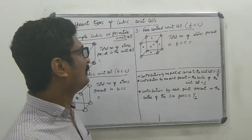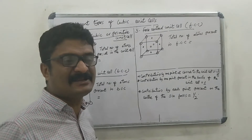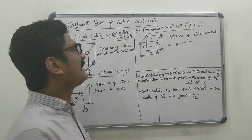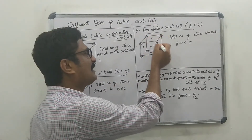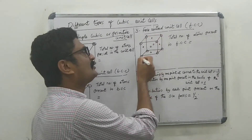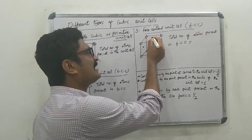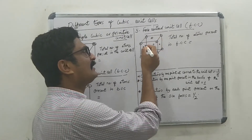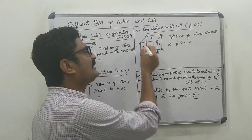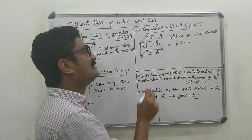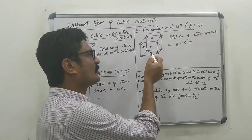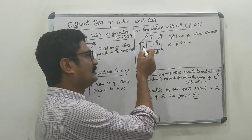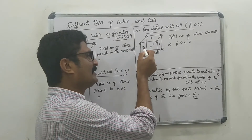In FCC, the atoms are present at the eight corners of the unit cell and also at the center of each face.